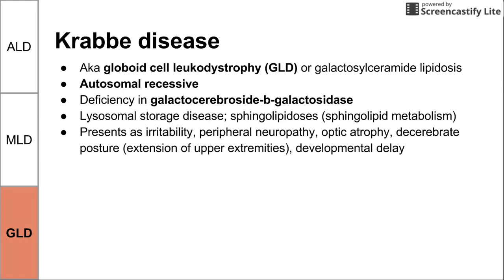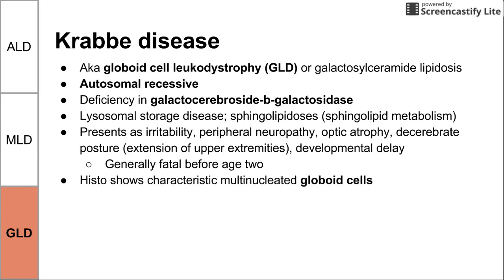Krabbe's disease presents as irritability, peripheral neuropathy, optic atrophy, and a posture disorder where a person extends their upper extremities — called decerebrate posture — and developmental delay. This disease is unfortunately fatal before the age of two. On histology, you see multinucleated globoid cells, which is worth looking up — this is also where the name globoid cell leukodystrophy comes from. Macrophages contain galactocerebroside, the molecule the deficient enzyme is unable to transport.